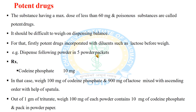To illustrate, take the example of codeine phosphate 10 mg — codeine phosphate is a potent drug. Weigh 100 mg of codeine phosphate and 900 mg of lactose and mix in ascending order with the help of a spatula. The total weight of the mixture is one gram. Out of this one gram of triturate, weigh 100 mg of each powder, which contains 10 mg of codeine phosphate, and pack in powder paper.